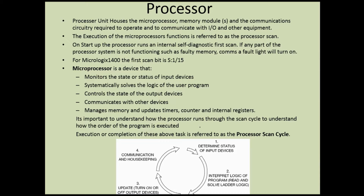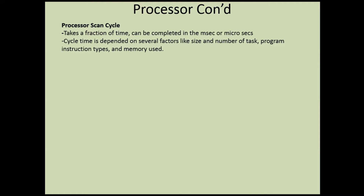Execution or completion of these tasks is referred to as the processor scan cycle. Looking at a picture of the scan cycle: after initial diagnostic testing, step one determines the status of the input devices - it reads all input modules and cards. Step two interprets and solves the logic of the program. Step three updates or turns on or off output devices. Step four communicates with other PLCs or equipment on the network and performs housekeeping.